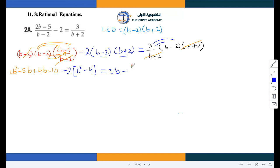Now if I have like terms I will add them together. 2B squared, there is no like term for B squared. Negative 5B plus 4B is negative 1B or negative B minus 10. Multiply negative 2 with both numbers inside the bracket, so negative 2B squared, negative times negative is positive, 2 times 4 is 8. Equals 3B negative 6.